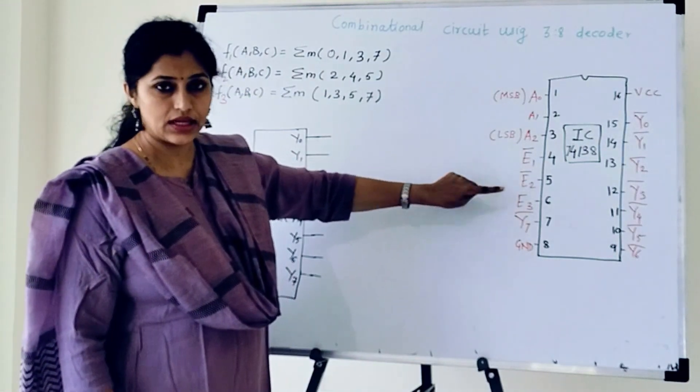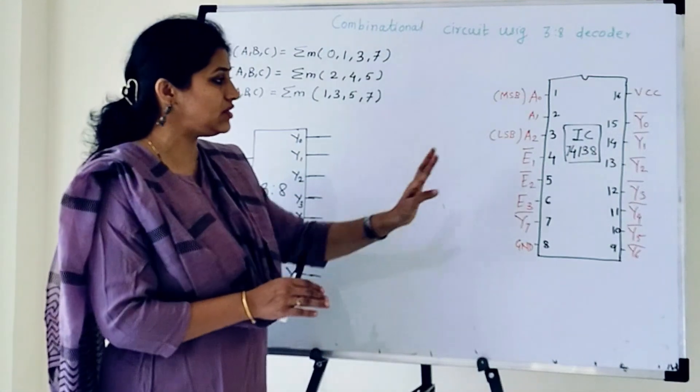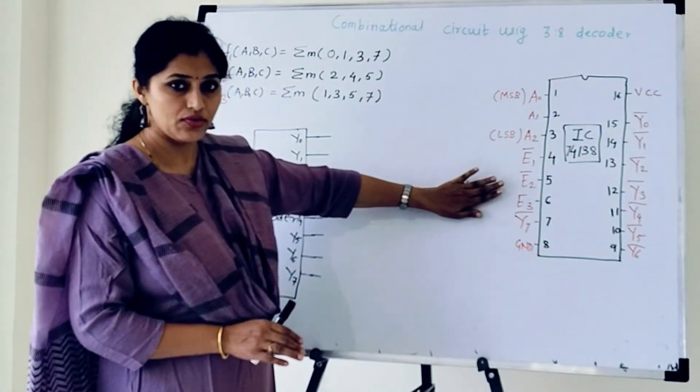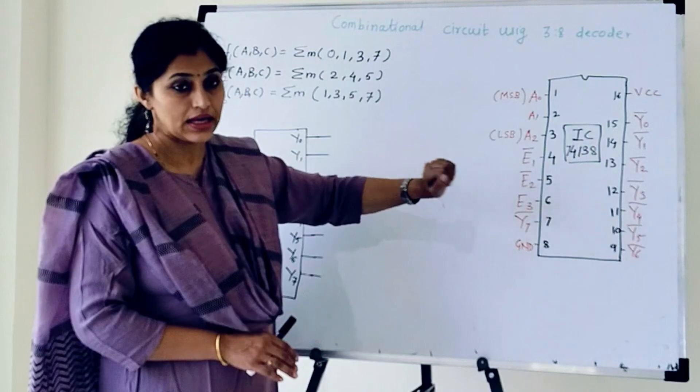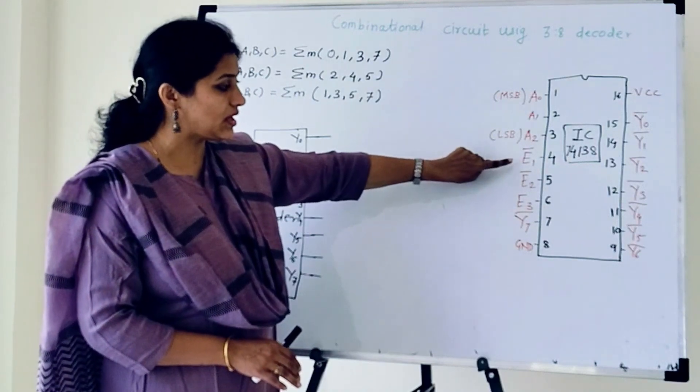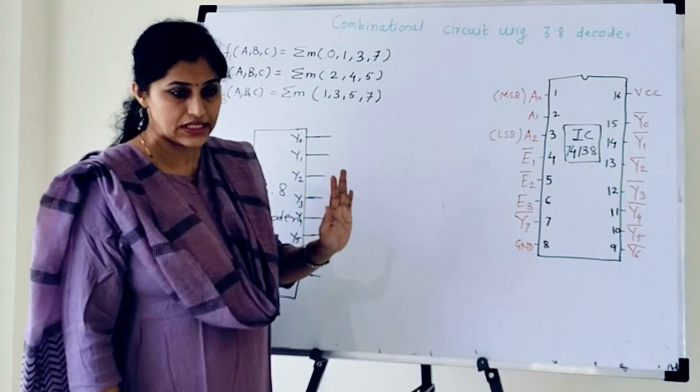E1, E2 and E3. Out of these 3 enable pins, E1 and E2 are active low whereas E3 is active high. It means we must connect E1 and E2 to ground and E3 to VCC.